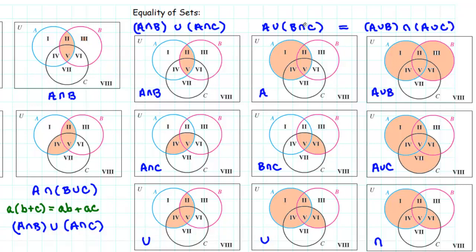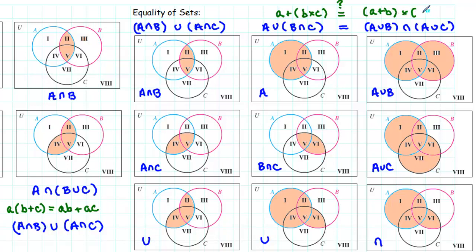Union is distributive over intersection. Now this is a little counterintuitive. Remember that multiplication is distributive over addition — but is addition distributive over multiplication? In other words, does A plus (B times C) equal (A plus B) times (A plus C)? No — we have to do multiplication before addition, so we're not able to distribute addition over multiplication. So this is not true in regular algebra, making it a notable difference with set theory.